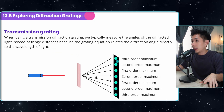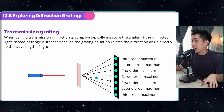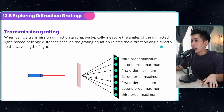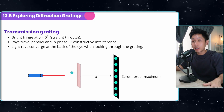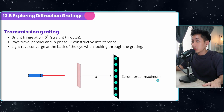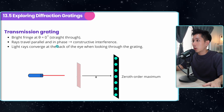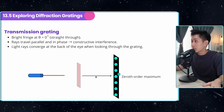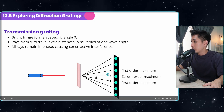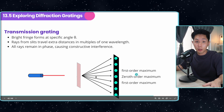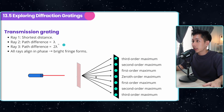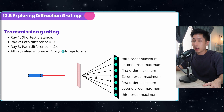Instead of measuring fringe distances, the angle is used because it relates to the equation better. When the angle is zero, we have the zero-order maximum, where rays travel parallel and in-phase, giving constructive interference. As the angle increases, we get the first-order maximum, second, third, and fourth — all bright fringes with path differences of lambda, two lambda, etc.